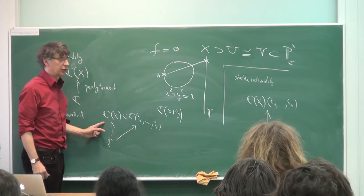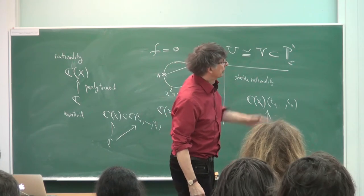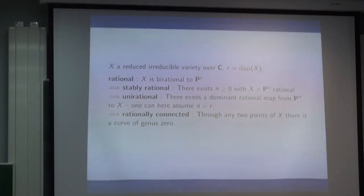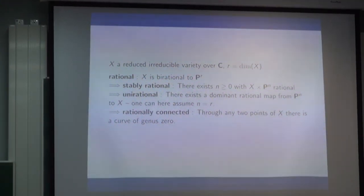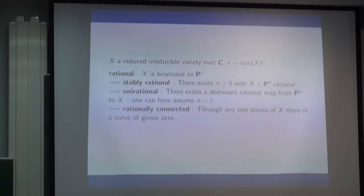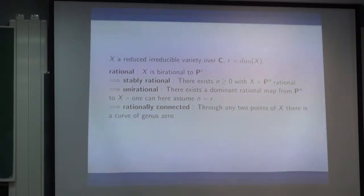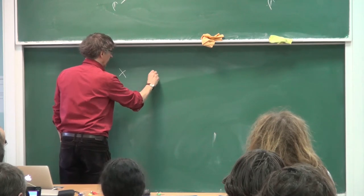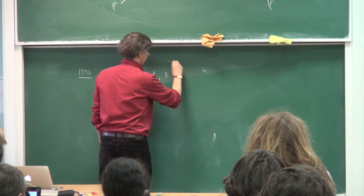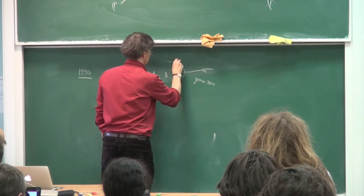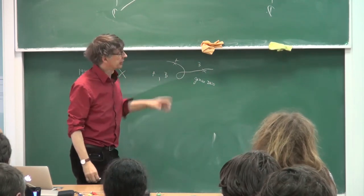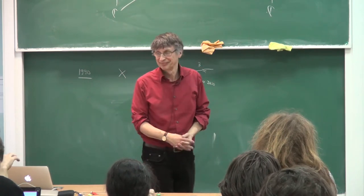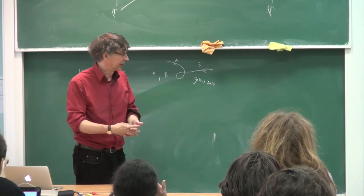Unirationality means asking whether you can fit your function field between ℂ and some purely transcendental extension of ℂ. You cannot do that with the function field of an elliptic curve, for instance. In geometric terms, you want a dominant rational map from projective space to x. It is easy to show that if some big projective space dominates your variety of dimension r, then Pʳ dominates the variety of dimension r.